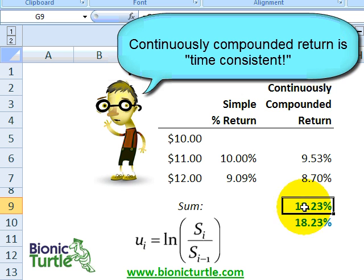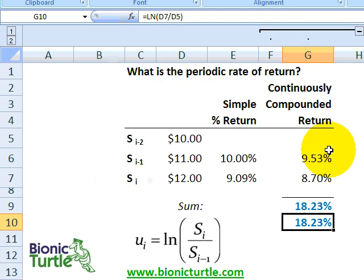That didn't happen in a simple return. This is really an elegant, dare I say, beautiful property of the continuously compounded return. So elegant, so useful, and in fact, why, in quantitative finance, we prefer to use this continuously compounded return.